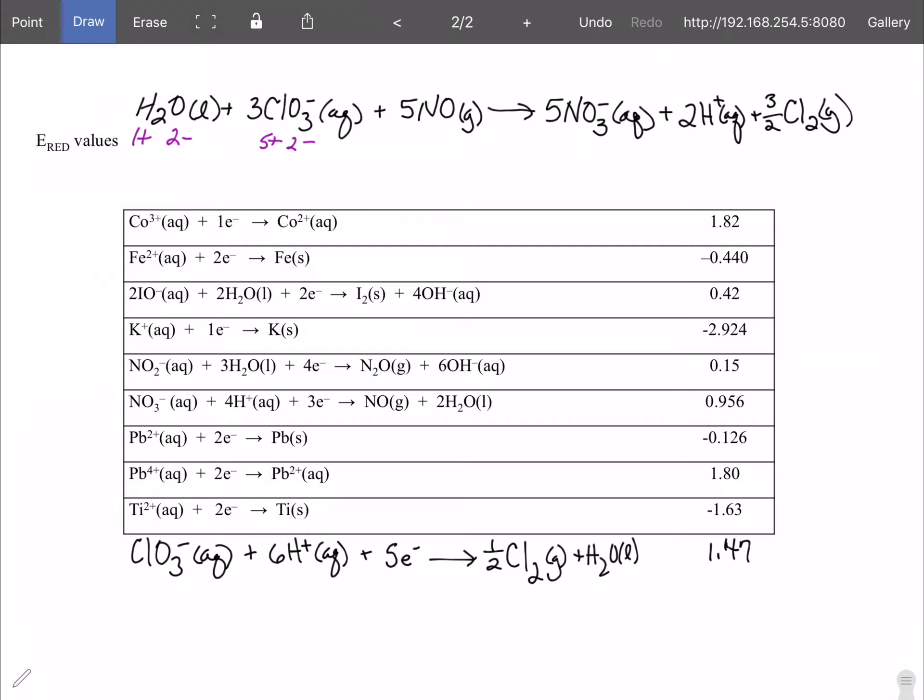On NO oxygen again is 2-. Nitrogen then has to be 2+. We move over to the nitrate again. Oxygen is 2-. There are three of them so it's 6- has to equal 1-. So here nitrogen is going to be 5+. Hydrogen here is 1+ and chlorine is in its elemental state so it is zero. So if we look at this chlorine is changing from 5+ to zero and nitrogen is changing from 2+ to 5+.